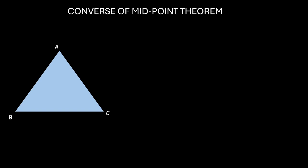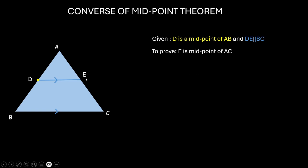So, over here, we are given that D is the midpoint and a line from D, which is DE, such that DE is parallel to BC. And, we need to prove that E is also the midpoint of AC. So, let us start. We can use the same concept that we used while we were proving midpoint theorem of congruency of triangles. So, we will be making a triangle over here.